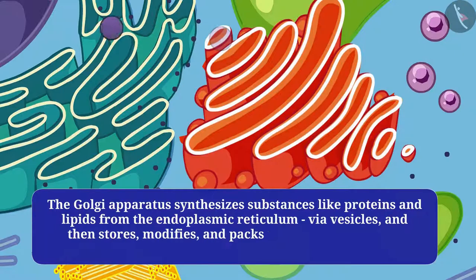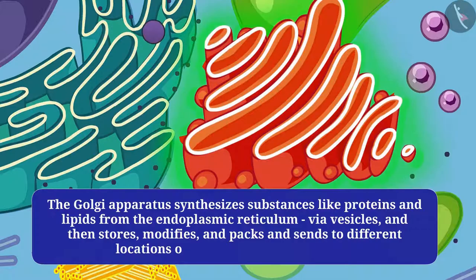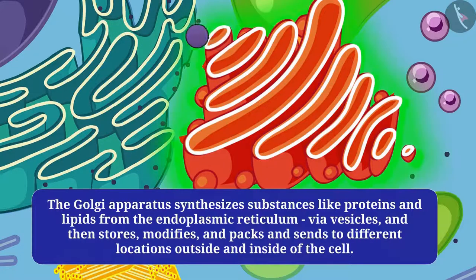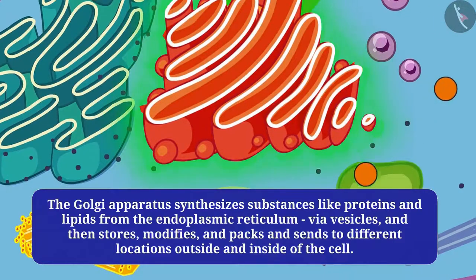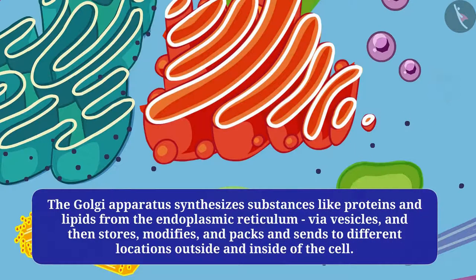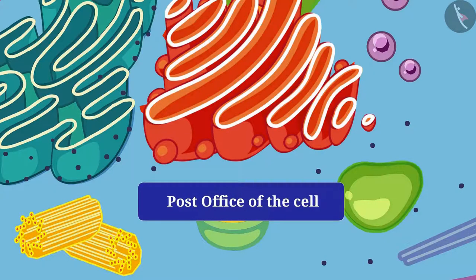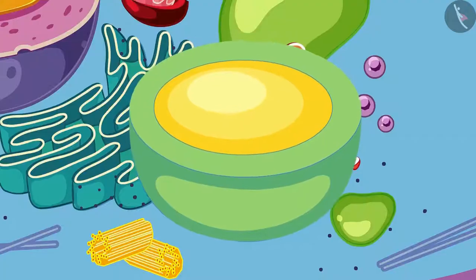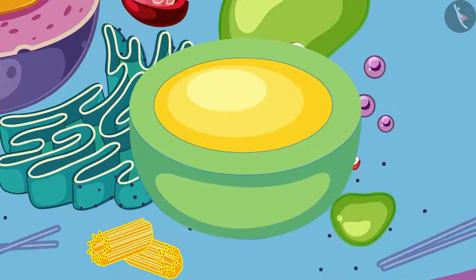The golgi apparatus synthesizes substances like proteins and lipids received from the endoplasmic reticulum via vesicles, and then stores, modifies, packs, and sends them to different locations outside or inside the cell. For this reason it is also called the post office of the cell. Lysosomes are also produced by the golgi apparatus.